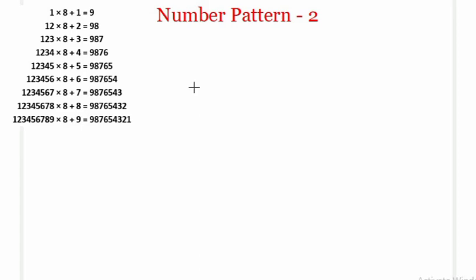Looking at this pattern, we can see the left-hand side is basically the sum of two numbers. Also, the first number among them is a product — for example, 1×8, then 12×8, then 123×8 — each is a product of two numbers. In the second row the term is 12, in the third row it's 123, in the fourth row it's 1234, and so on. This is another observation: the numbers keep increasing.